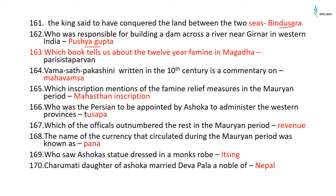The book that tells us about the 12-year famine in Magadha is the Parishishtaparvan. Vamsatthapakasini, written in the 10th century, is a commentary on the Mahavamsa. The Mahasthan inscription mentions famine relief measures in the Mauryan period. The person appointed by Ashoka to administer the western provinces was Tusaspa. The revenue collecting officers outnumbered the rest of the Mauryan officials. The currency that circulated during the Mauryan period was known as Pana.